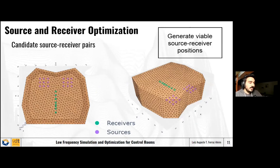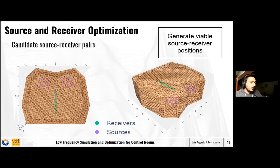Then we find a way to select a viable set of source-receiver positions. We have a couple of parameters that can be changed — for example, the minimum distance between two speakers (left and right), and the minimum distance from the speaker to the wall. From a set of rules, we can generate a set of viable source-receiver positions, for which we run our objective function.